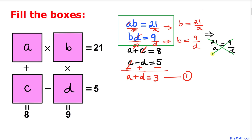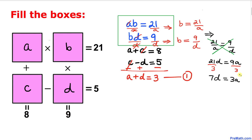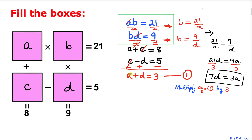Let's cross-multiply both sides: 21D equals 9A. Dividing both sides by 3 to simplify, we get 7D equals 3A.